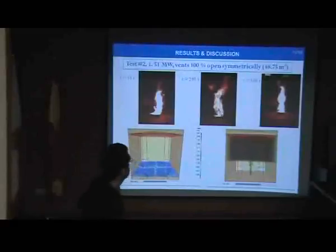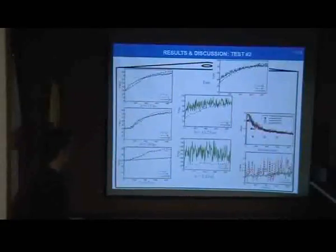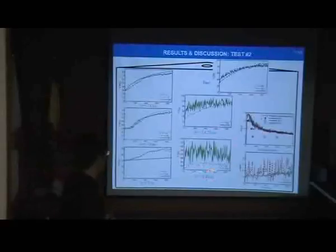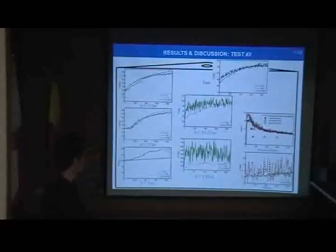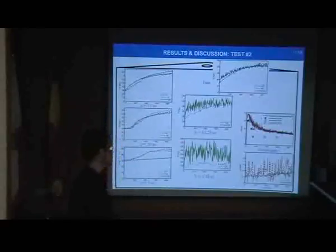Now, we analyze quantitatively the results. Again, FDS over predicts the temperature near the flames, although the differences are much lower, being in the range between 50 and 100%. And at the upper parts, all over the domain, the agreement is really good, with differences lower than 8% all over the domain.